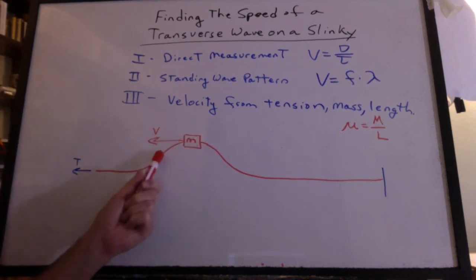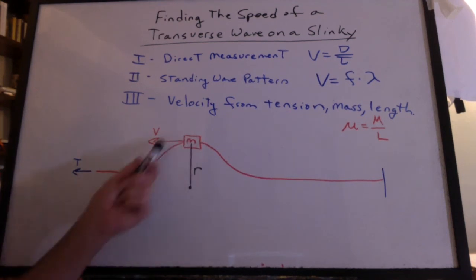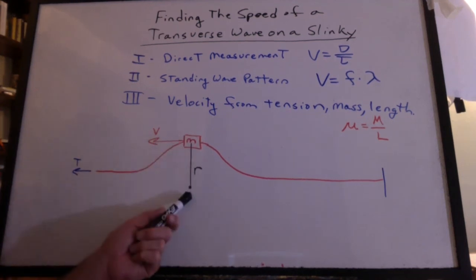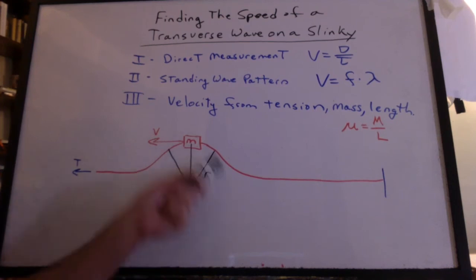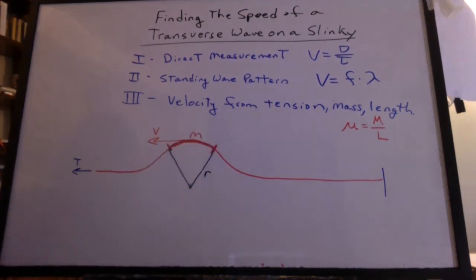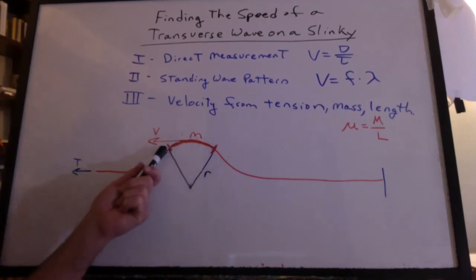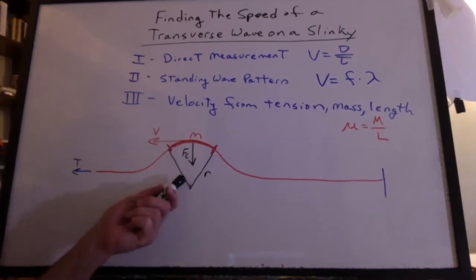Well, at the top of the curve, we can approximate this to be a section of a circle of radius R. It's not circular all the way around, it's only circular across the top. We can assume this section is mass M, and if it's moving in a circle, there must be a centripetal force.